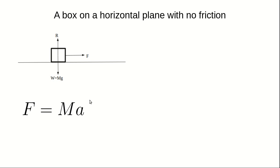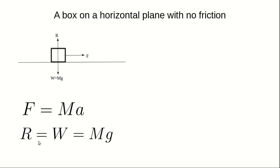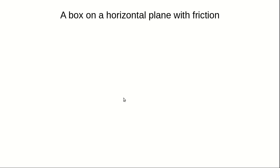This force is along the horizontal. Along the vertical, R is opposing the weight W. As long as the block is not moving vertically upward or downward, R is exactly equal to W, giving us R = mg. Now let's consider another example: a box on a horizontal plane with friction.